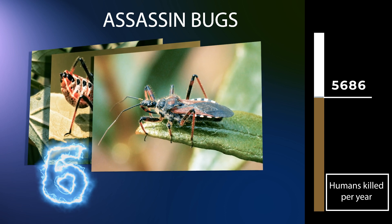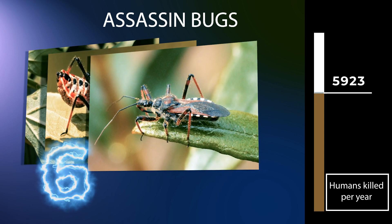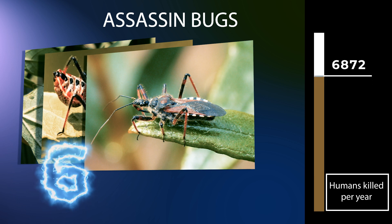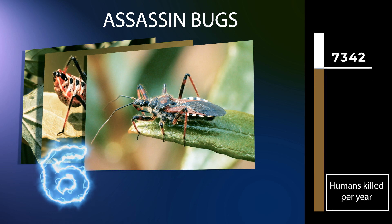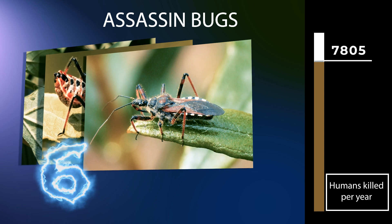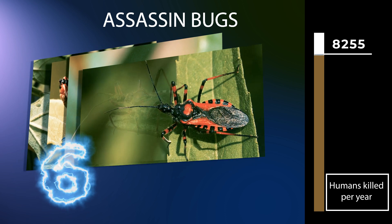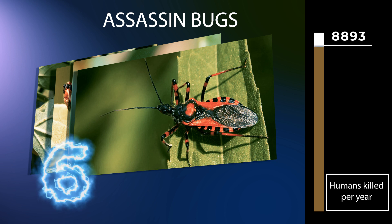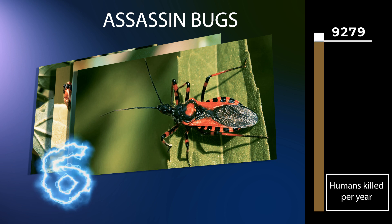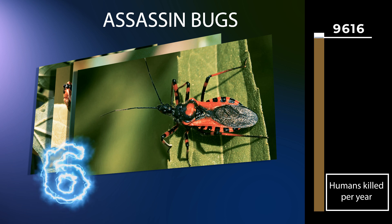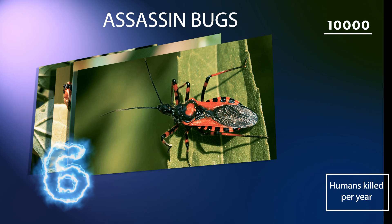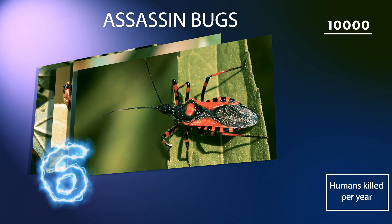Large specimens should be handled with caution, if at all, because they sometimes defend themselves with a very painful stab from the proboscis. The Reduviidae are members of the suborder Heteroptera of the order Hemiptera. The family members are almost all predatory, except for a few blood-sucking species, some of which are important as disease vectors. About 7,000 species have been described in more than 20 recognized subfamilies, making it one of the largest families in the Hemiptera.